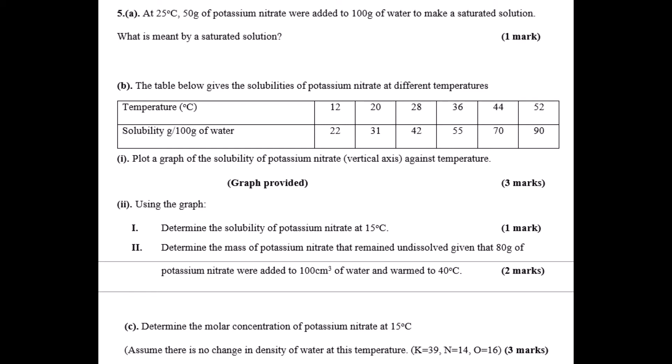Part B: you're given a table consisting of solubility at given temperatures of potassium nitrate at different temperatures. Use the data to draw a graph of solubility on the y-axis against temperature along the x-axis.